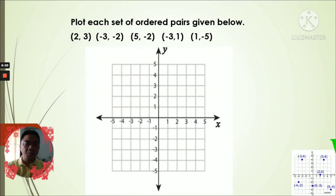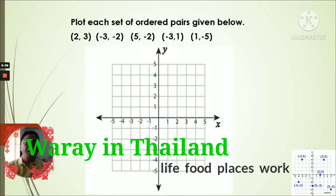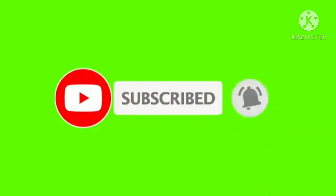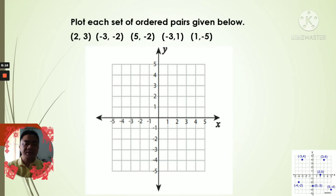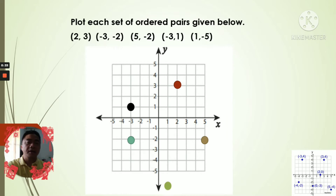Hello, good morning once again, my dear Math 1 students. How are you today? I hope that you're doing good. Last time we had a discussion on plotting different ordered pairs. We plot all the given ordered pairs — two three, negative three negative two, five negative two, negative three one, and one negative five. I asked you to plot all the given ordered pairs and some of you did it well, and some of you did not.